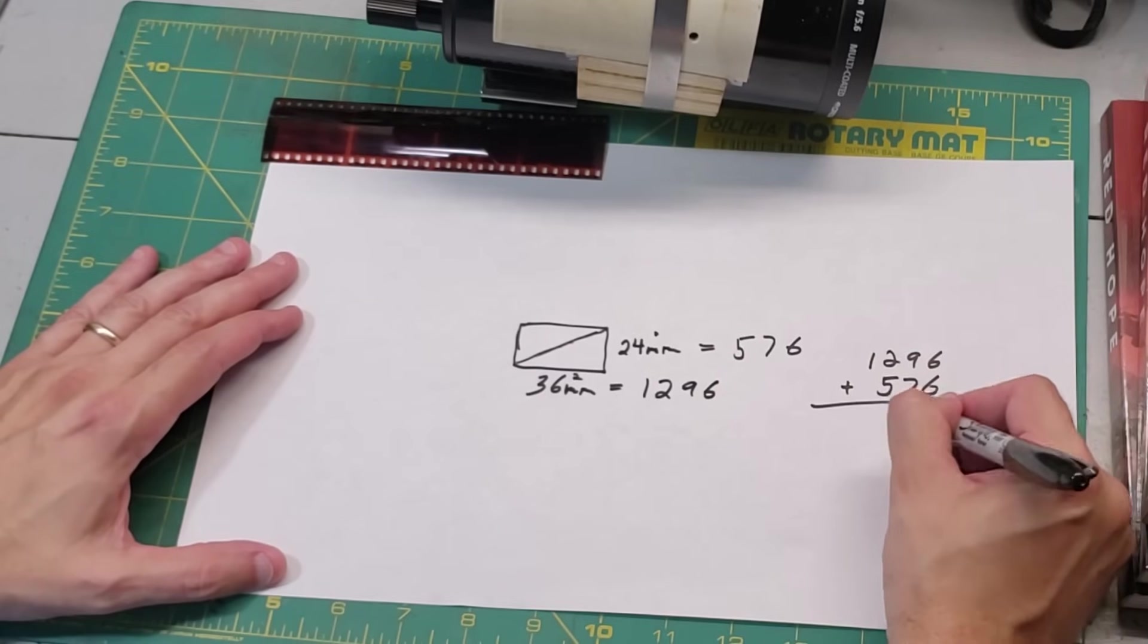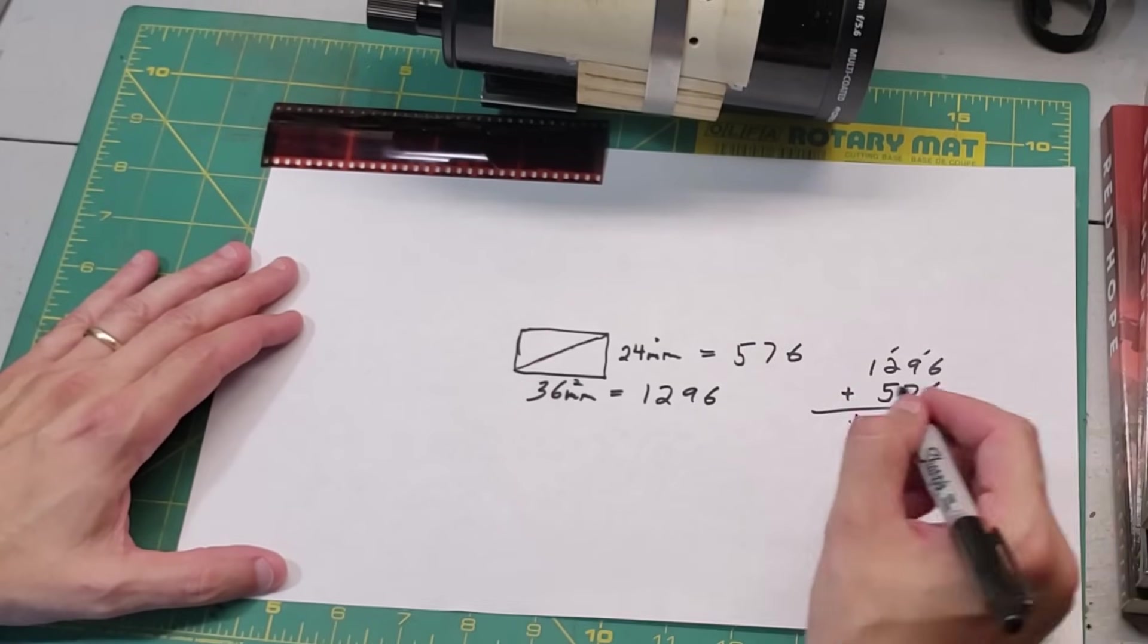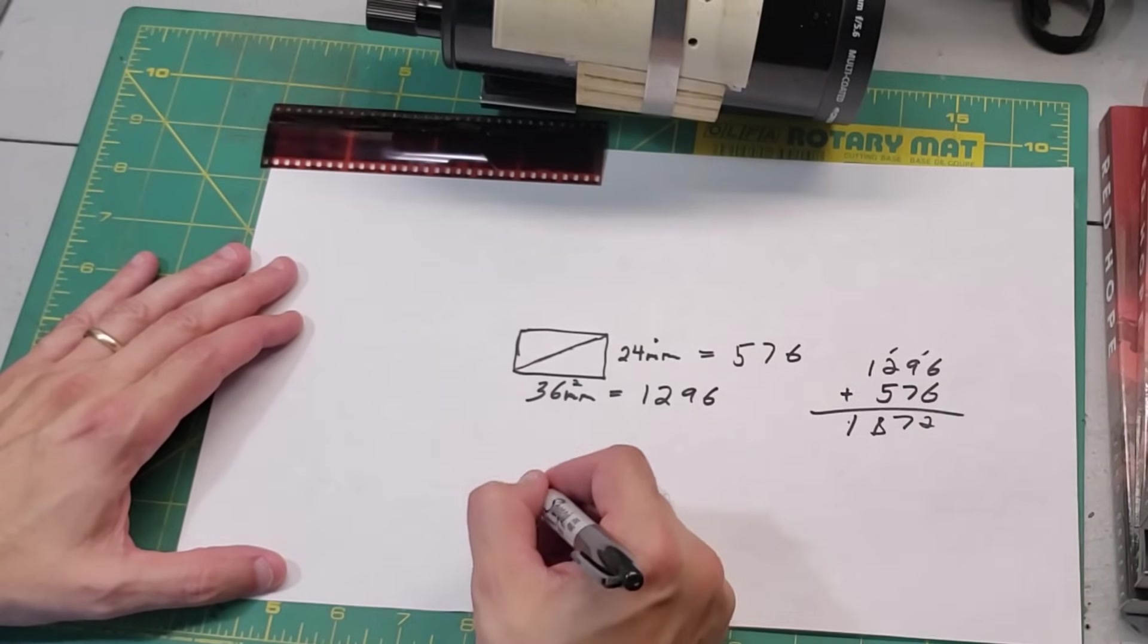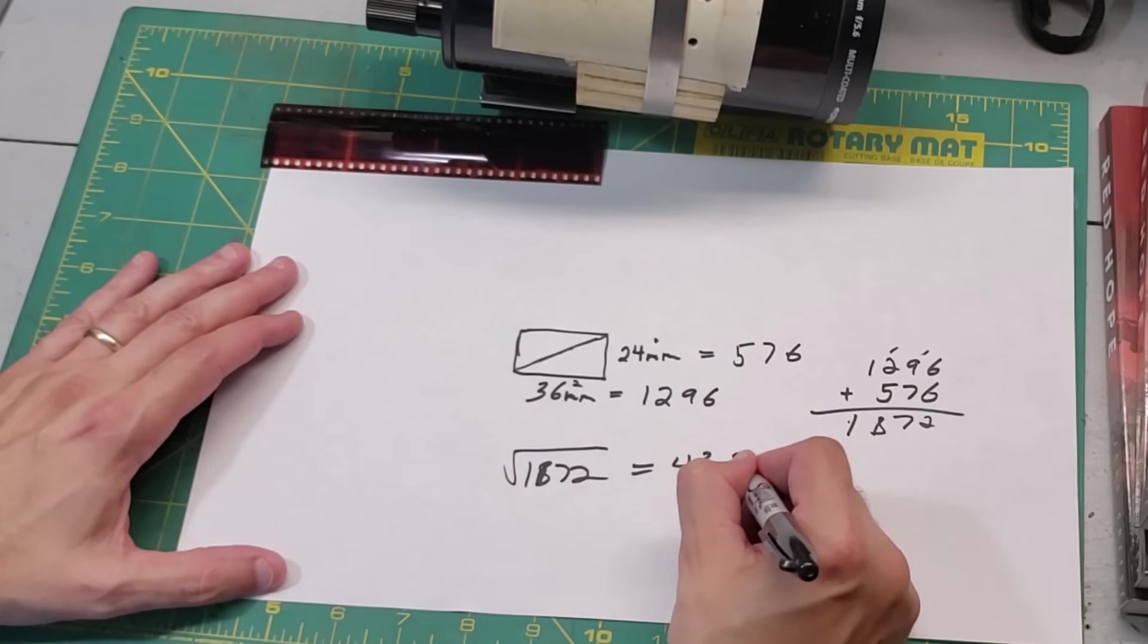To get this diagonal, we just take the square root of 1872, and we get about 43.2 millimeters.